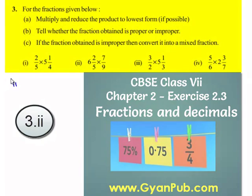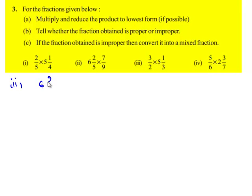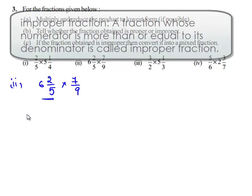Now let's move on to the second problem. The given expression is 6 2/5 multiplied by 7/9. We observe that 6 2/5 is a mixed fraction, so first we need to convert 6 2/5 into its improper form.